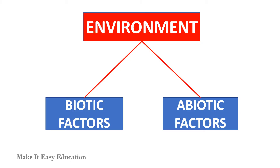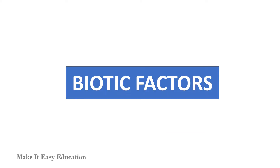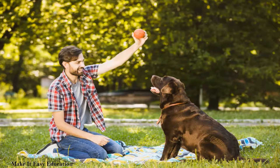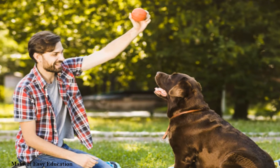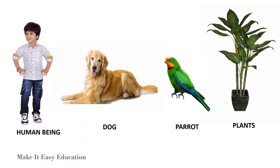Our environment has two main factors: biotic factors and abiotic factors. Living things in our environment are called biotic factors — for example, human beings, dogs, parrots, and plants.